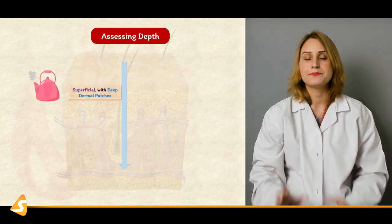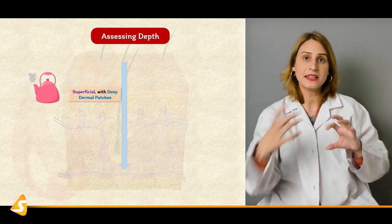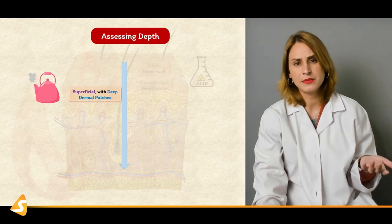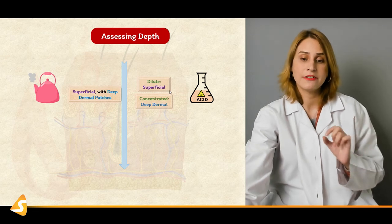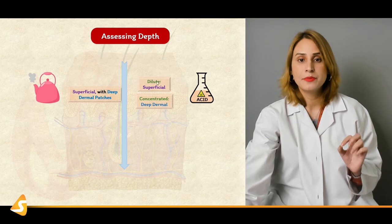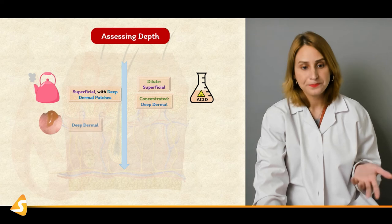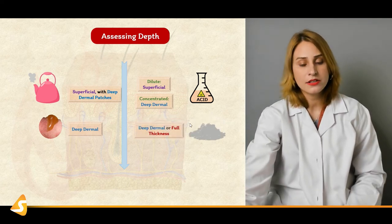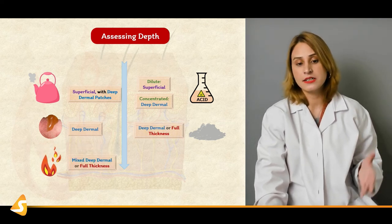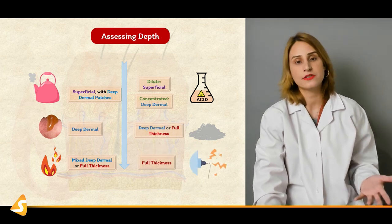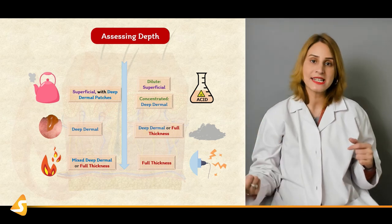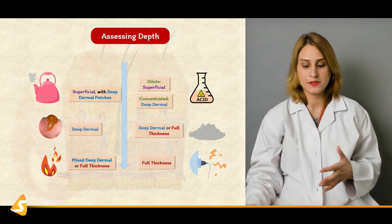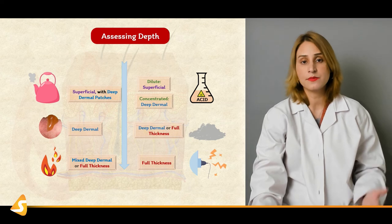Regarding assessment of depth, the mechanism of injury gives you the assessment of depth. In cases of kettle injuries, they're mostly superficial or can have deep dermal patches. In case of acid burns: if the acid is diluted, it would be a superficial burn, and if concentrated, mostly it's a deep dermal burn. Scald injuries are deep dermal burns. Hot water also leads to deep dermal or full thickness burns. Fire results in mixed deep or full thickness burn. And electrical burns are also most of the time full thickness burns. The mechanism of injury is important — always ask how the burn was produced: was it electric, acid, kettle, boiling hot water, or fire? The mechanism of injury is very important in assessing the depth.